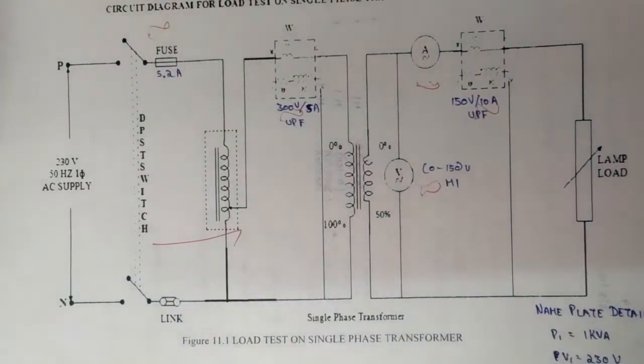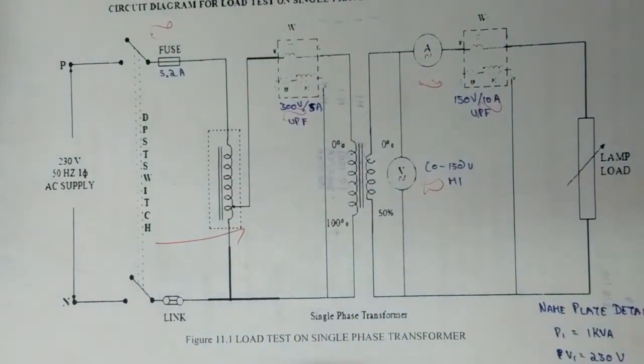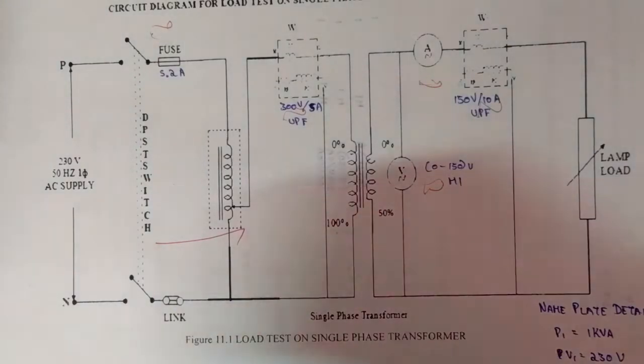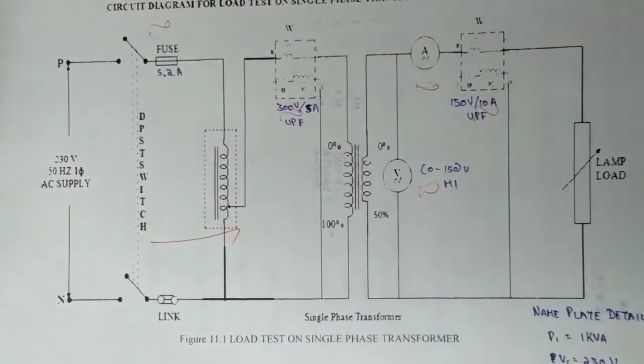Before going to the procedure, the precautions we should take care of: fuse should be selected such that its current rating is 120% of no load current of the transformer. The DPST switch is kept open at the time of starting the experiment. While giving the connections, the load should be in the off position at the start of the experiment.